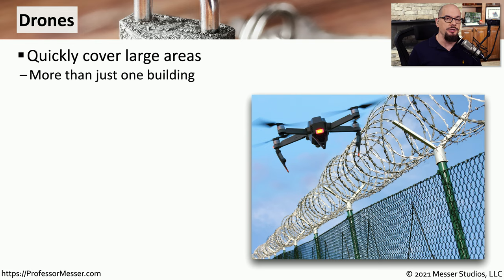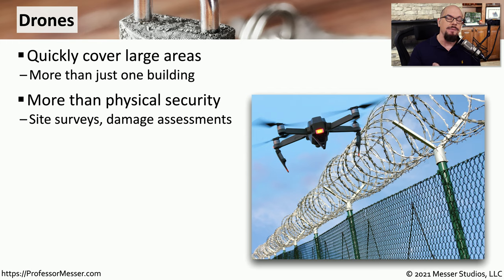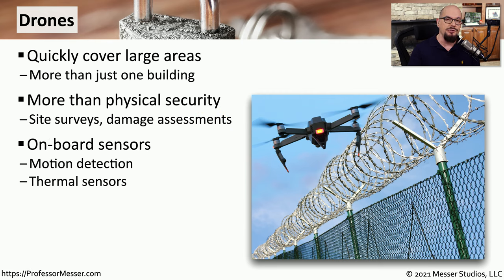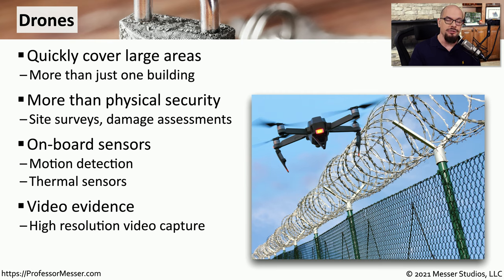Some security teams have started to use drones to monitor large areas, especially those that would not be easy to access by car or on foot. This might be a situation with multiple buildings where a drone could quickly cover a very large area in a very short period of time. These drones may not be used for constant security, but for very specific situations — for example, to perform a site survey or assess damage that may have occurred at a facility. Many drones include sensors that can show motion or heat, and many include high resolution video so you get a recorded view of exactly what the drone was able to see.